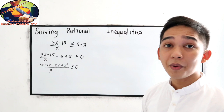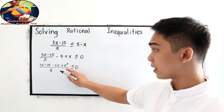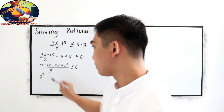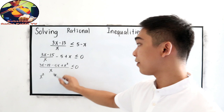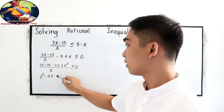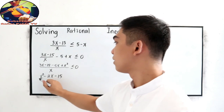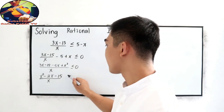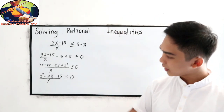Now simplify the numerator and arrange in descending order. We get x squared, then 3x minus 5x equals negative 2x, minus 15, all over x, less than or equal to zero.